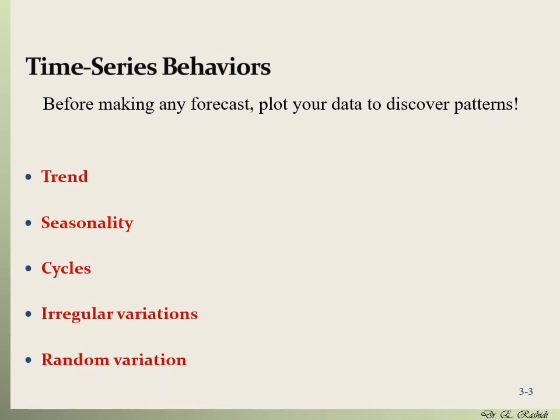Before we try to make a prediction and forecast about a time series, let's first understand the behavior of time series. There are different types of behavior involving patterns and variation. These are: trend, seasonality, cycles, irregular variations, and random variation. We're going to talk about each of these in the following.